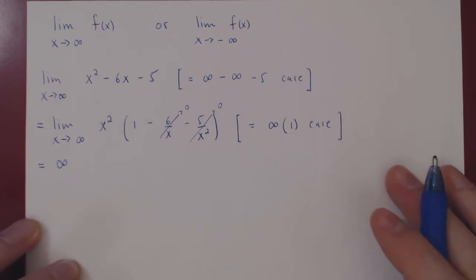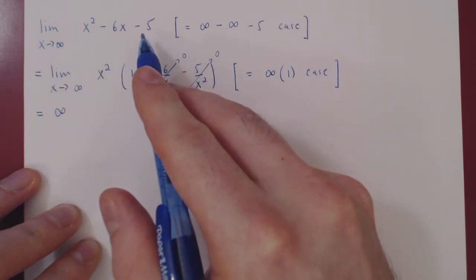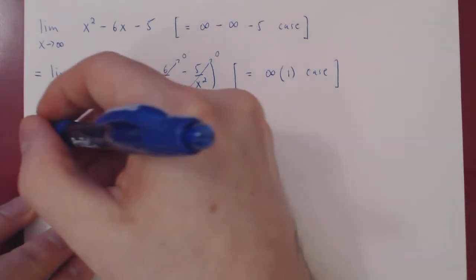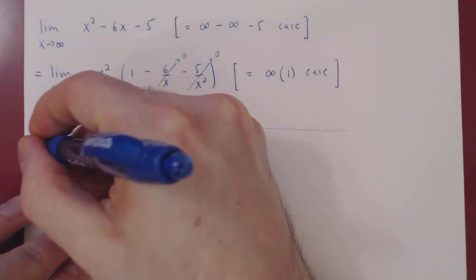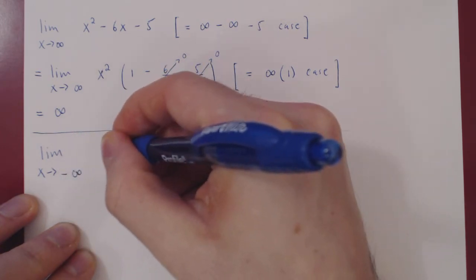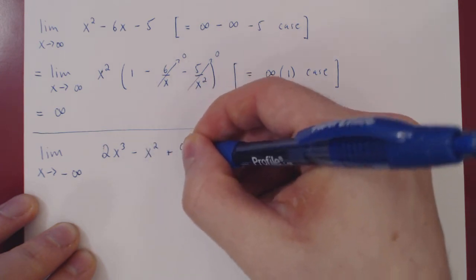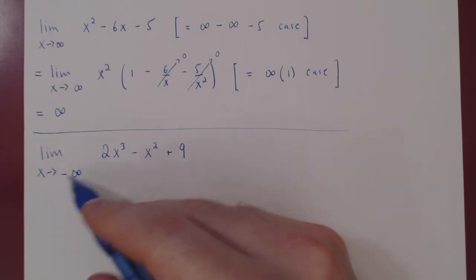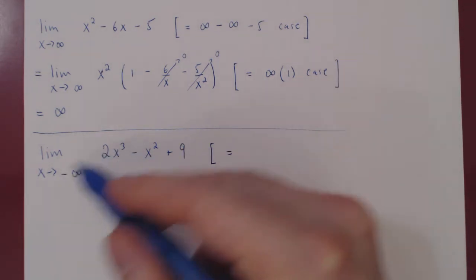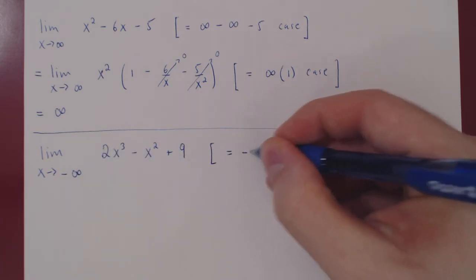This will always be the case. Whenever you have a limit at infinity involving a polynomial, you'll always have a one-line solution — by factoring the larger power of x, you'll essentially be done. Now let's look at the limit as x approaches negative infinity. As x goes to negative infinity, since 3 is odd, x cubed goes to negative infinity, times 2 approaches negative infinity.